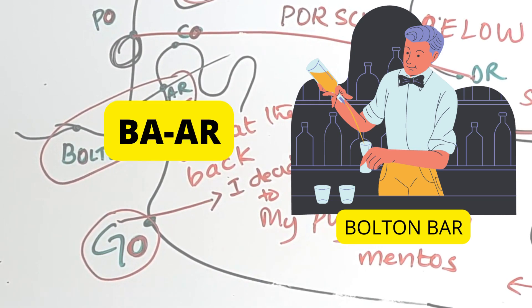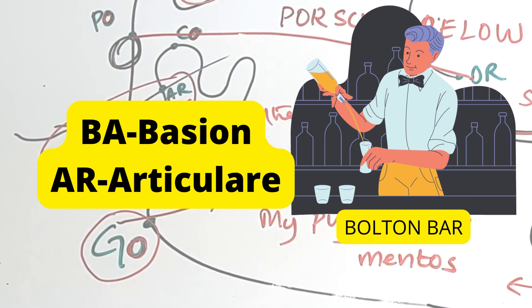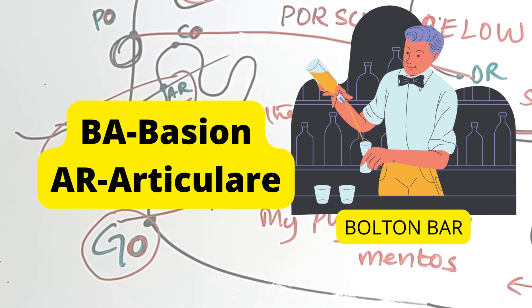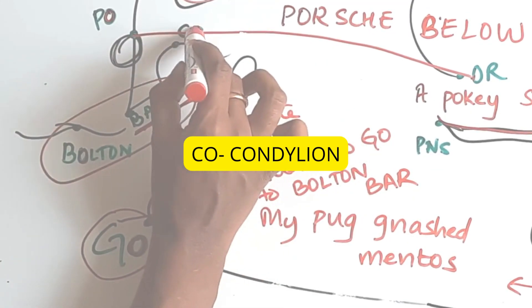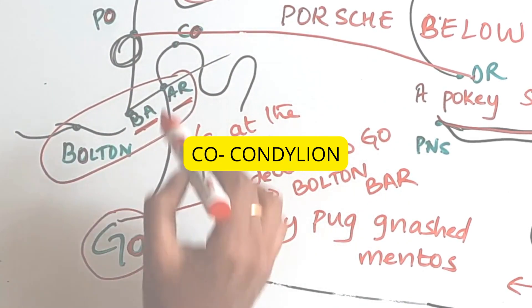Bar, B-A-A-R. So B-A, basion, and AR is articular. CO is easy because condylion starts with CO, so there's no need of a mnemonic for that one.